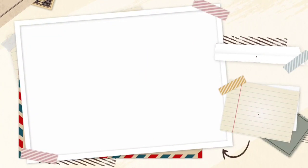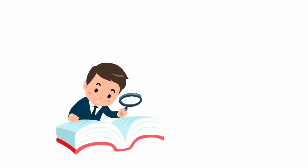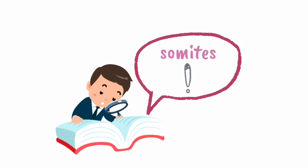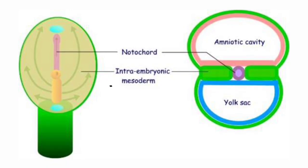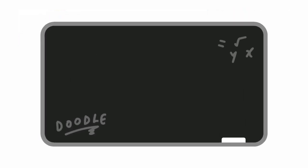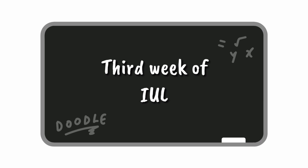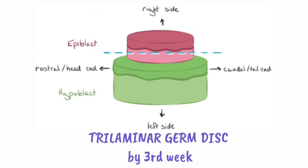Today we are going to discuss the topic intraembryonic mesoderm, and a short note that can come from this area is the somites. Intraembryonic mesoderm, as the name suggests, is the mesoderm developed within the embryo. It is formed during the third week of intrauterine life, and by the third week the embryonic disc will be a trilaminar germ disc.